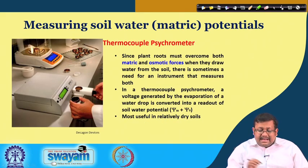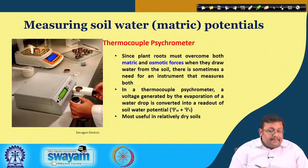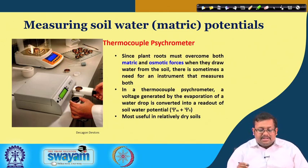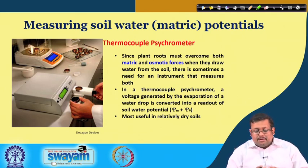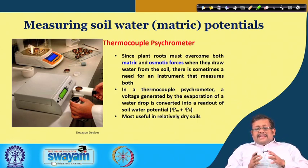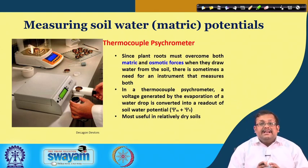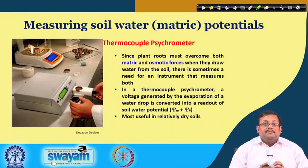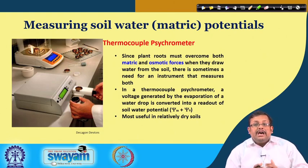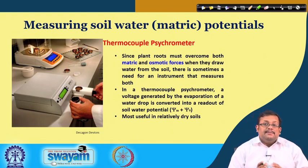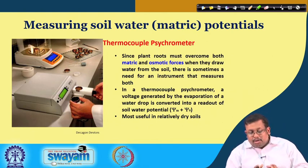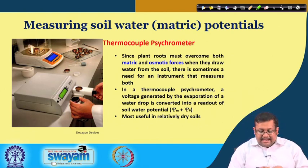Another important instrument is the thermocouple psychrometer. It basically measures both metric and osmotic forces. In a thermocouple psychrometer, a voltage generated by the evaporation of a water drop is converted into a readout of soil water potential, which is the combination of both metric potential and osmotic potential. It is most useful in relatively dry soils.